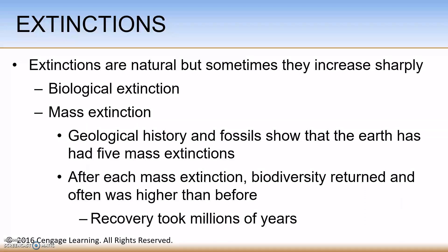After each mass extinction, biodiversity returned and often was higher than before. Please note that the recovery of a mass extinction took millions of years. Also, during each mass extinction, between 50 to 90 percent of all species appeared to have become extinct.